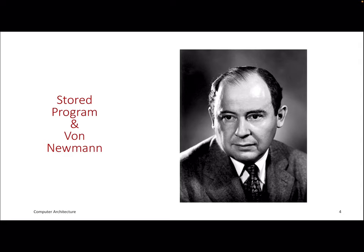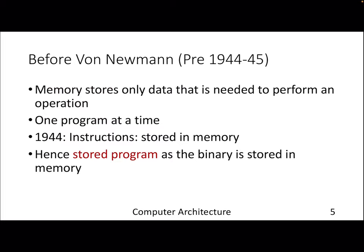Before 1944-45, memory used to store only the data needed for your program. For example, if you are running matrix multiplication and storing data as an array, memory would store the array elements — integers or floating point numbers. Post 1944, von Neumann came up with the notion of instructions also getting stored in memory, meaning the program you have written, once compiled, creates object code — the binary itself is now stored in memory. So from now on, we should remember that memory stores both data and instructions.